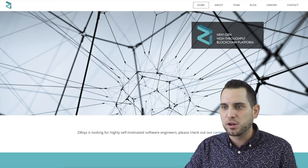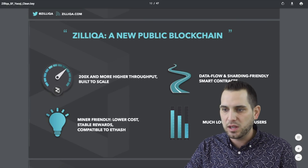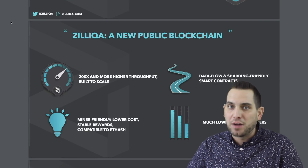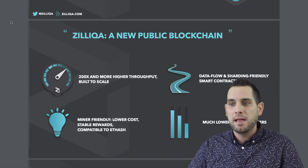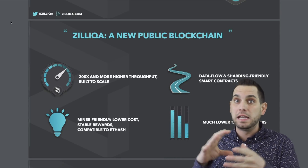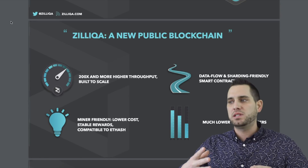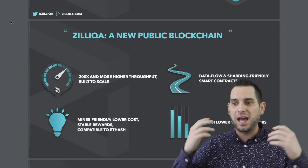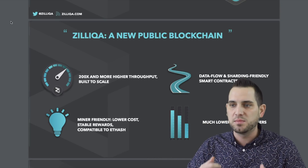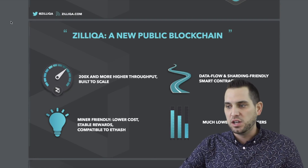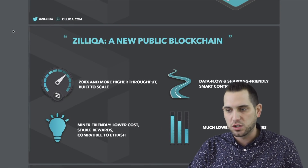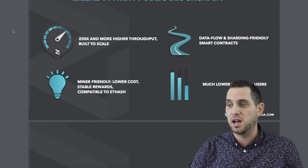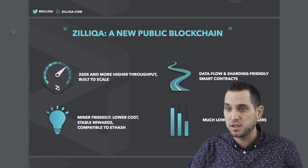The issue they're looking at is that for private blockchains, it's pretty easy to have high throughput and high transactions because they're private, maybe on an intranet. But what happens when we take these blockchains and try to go public with them? That's where the issue really comes into play. With Zilliqa, they're basically looking to achieve 200x or more higher throughput, built to scale, miner-friendly, low cost, low transaction fees, data flow, and sharding-friendly smart technologies.